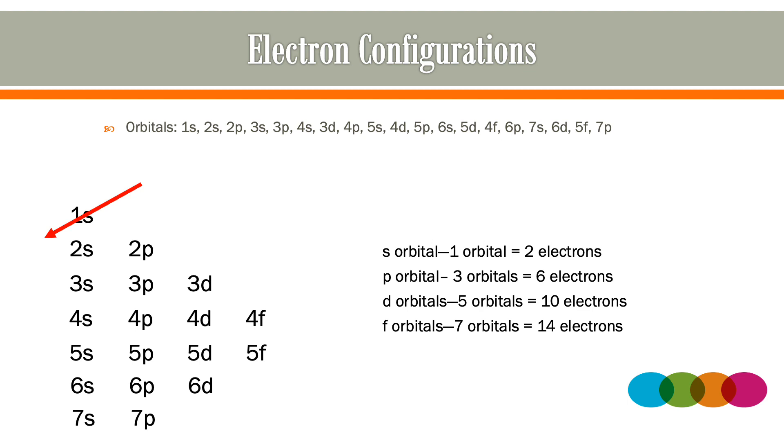Then, follow these lines in order to know which orbital comes next. You must remember how many orbitals there are and that up to two electrons can occupy each orbital.